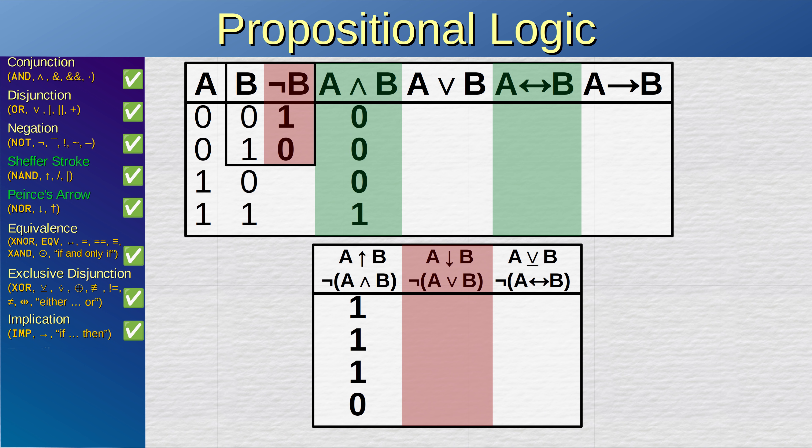For disjunction, the proposition is that at least one of the inputs is true. The proposition is true when A is true or B is true, and false if both are false. For equivalence, the proposition is that all inputs are equivalent. The proposition is true when A and B have the same value, and false otherwise. For exclusive disjunction, the proposition is that exactly one input is true. The proposition is true when A is true or B is true, but not when neither or both are true. For implication, the proposition is that the antecedent implies the consequent. The proposition is true when A implies B, and false otherwise.